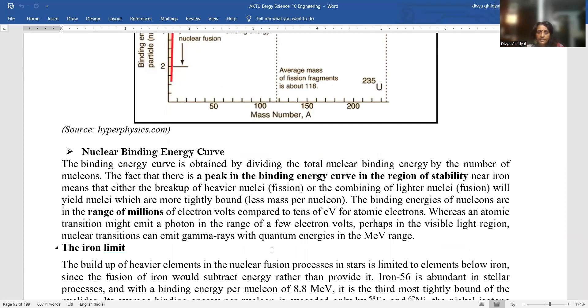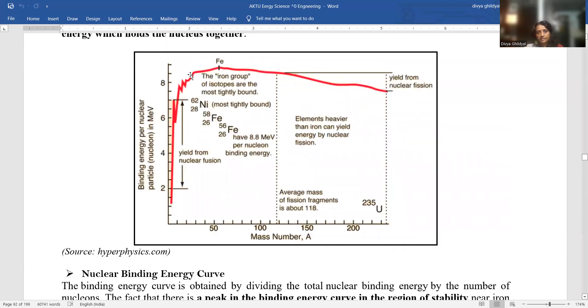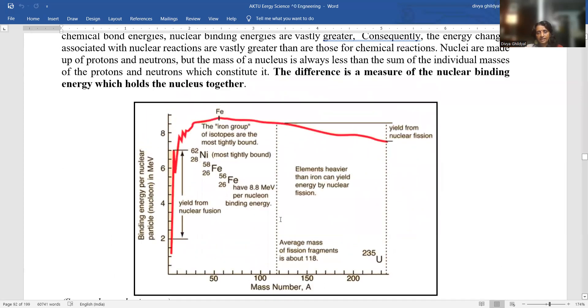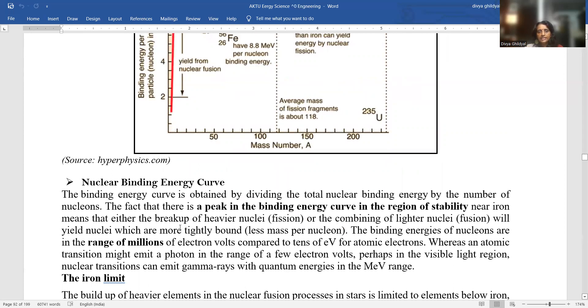The difference is a measure of the nuclear binding energy which holds the nucleus together. The nuclear binding energy curve is obtained by dividing the total nuclear binding energy by the number of nucleons. The fact that there is a peak in the binding energy here, this is the region of stability as you can see in this diagram around iron. It means that either the breakup of nuclear or the combining of nitrogen nuclei will yield nuclei which are most tightly bound.